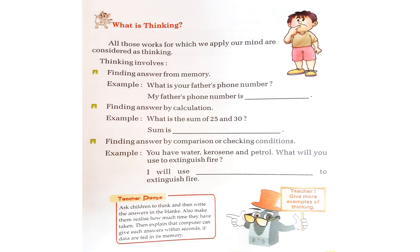All those works for which we apply our mind are considered as thinking. When we use our brain and perform, that is mind and perform, we say it as thinking. Thinking involves, which are the things which involves in thinking?